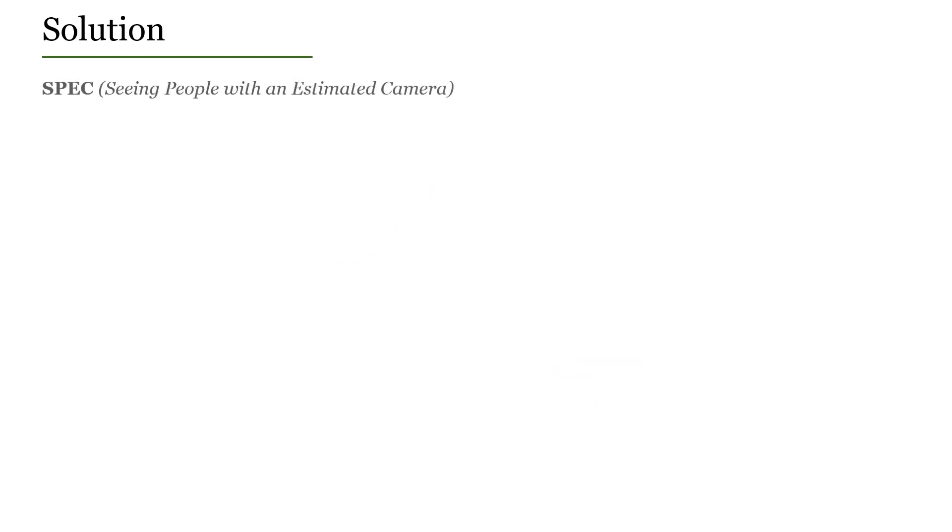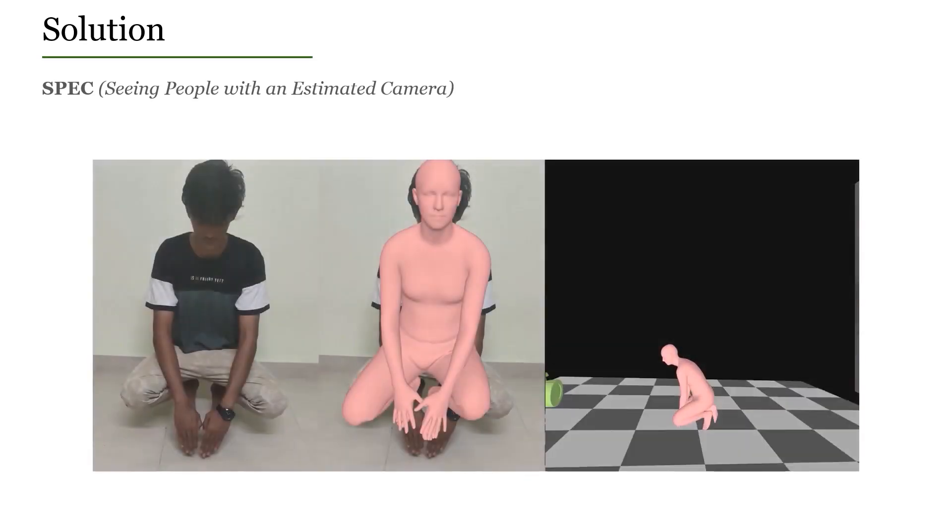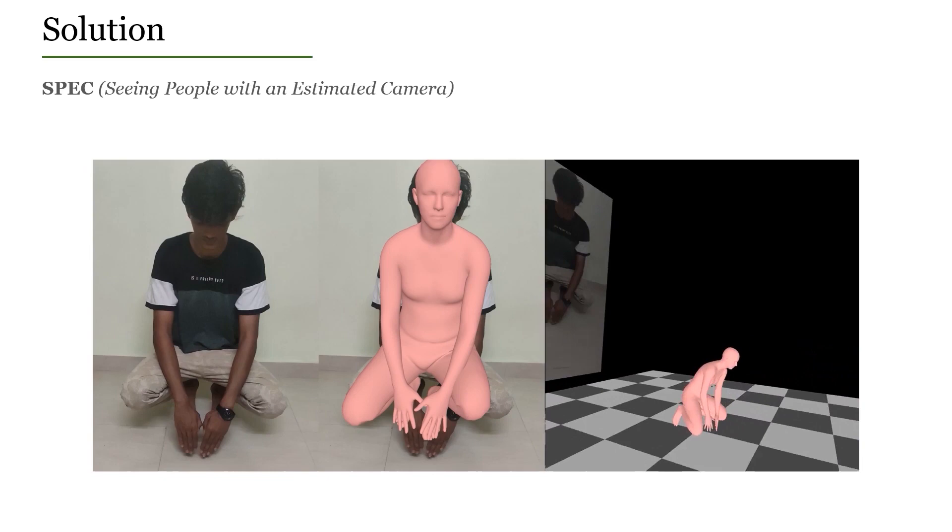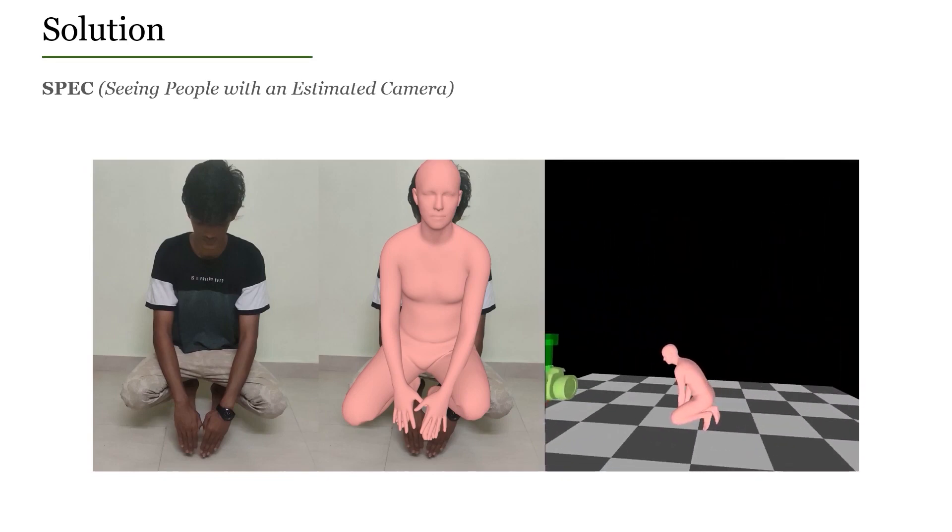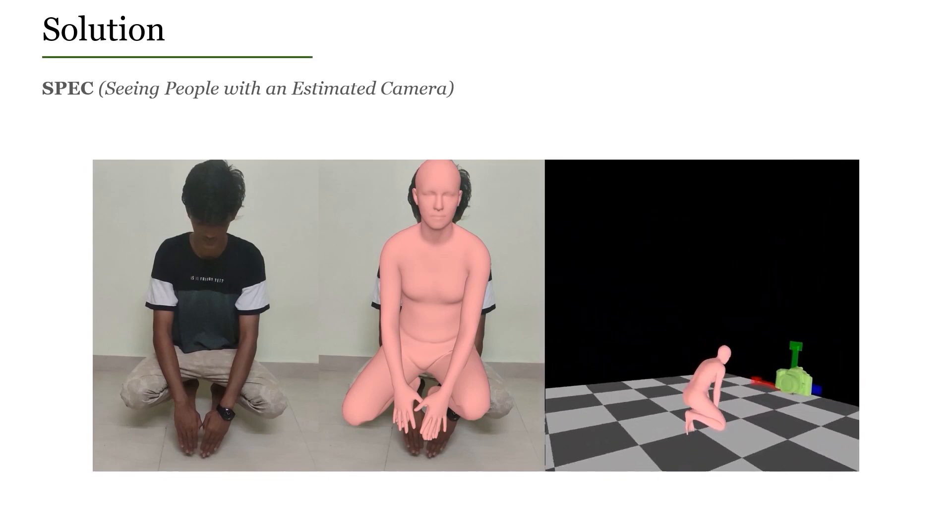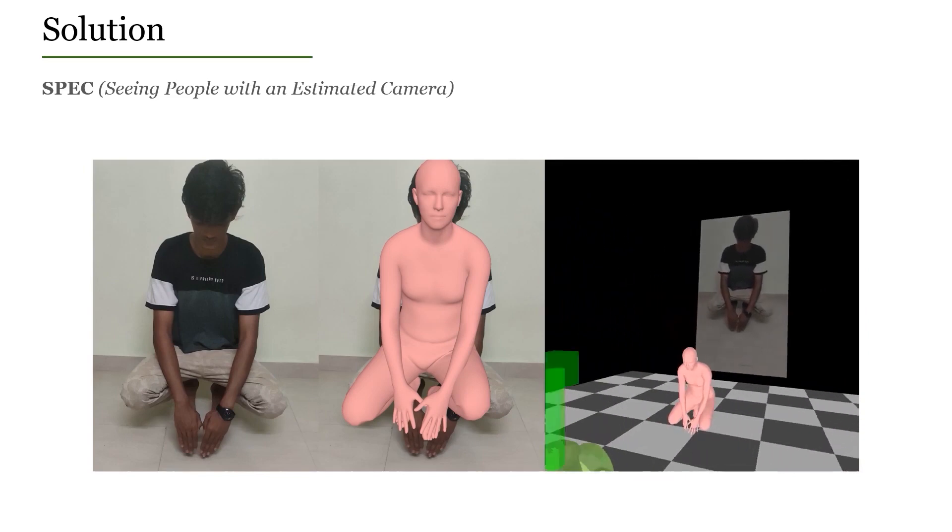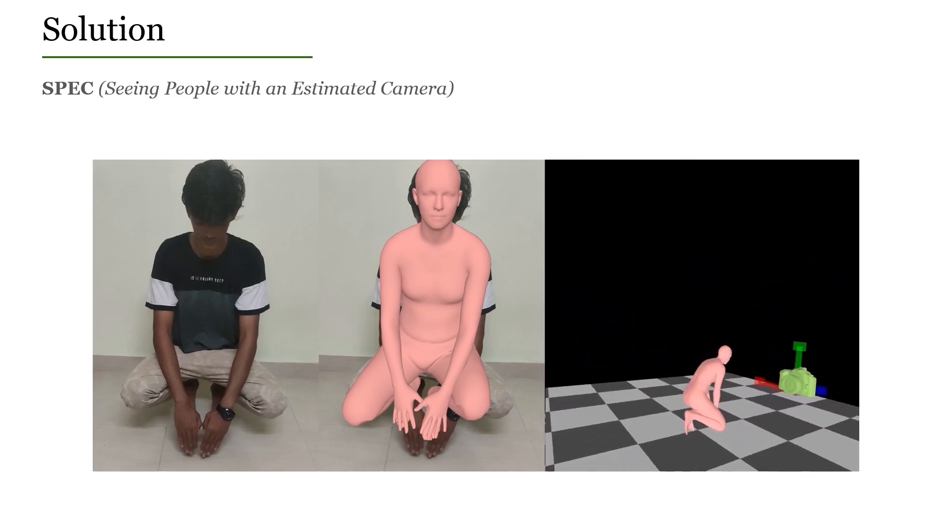We exploit this estimated camera information in a novel neural network called SPEC, which stands for Seeing People with an Estimated Camera. SPEC leverages the estimated camera information in multiple ways to improve 3D human body reconstruction.